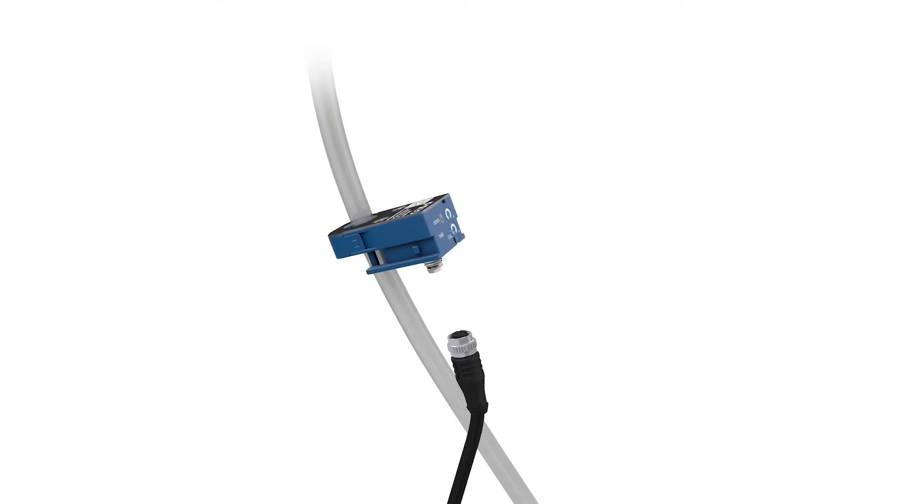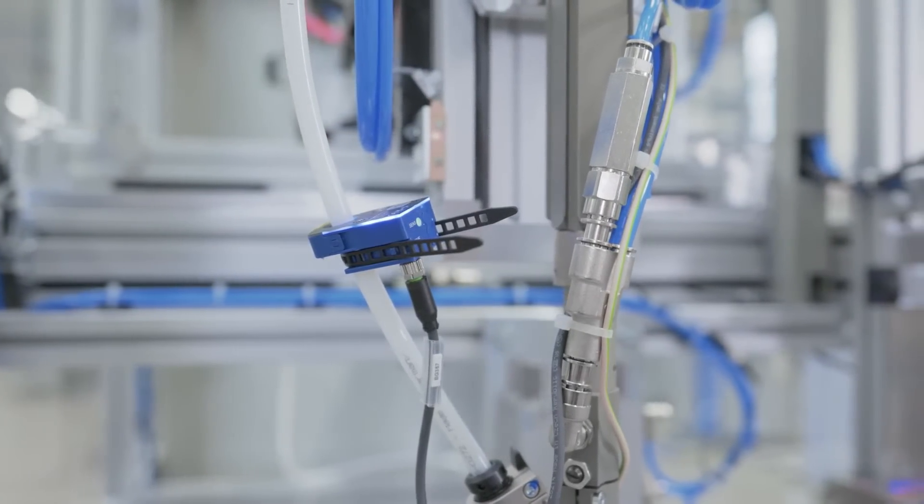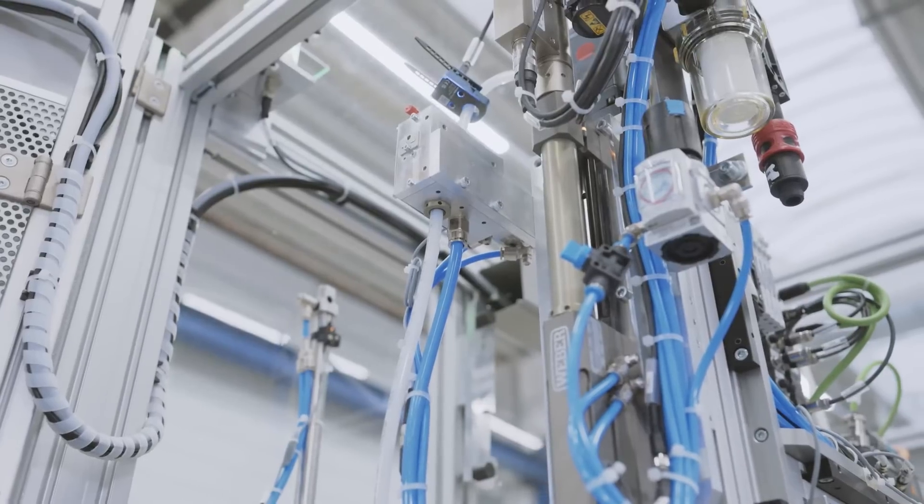The separable housing enables easy and quick installation and removal of the ring sensors. On hoses, for example, the hoses are replaced at regular intervals to guarantee the process reliability of the systems.